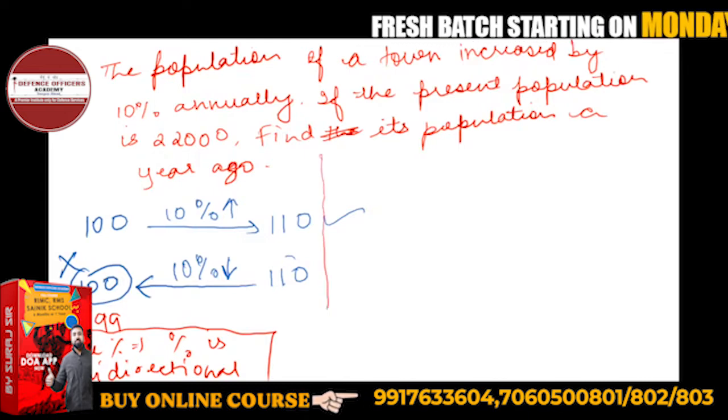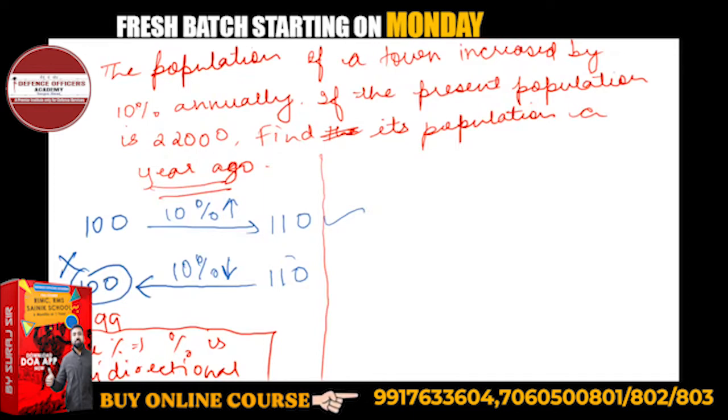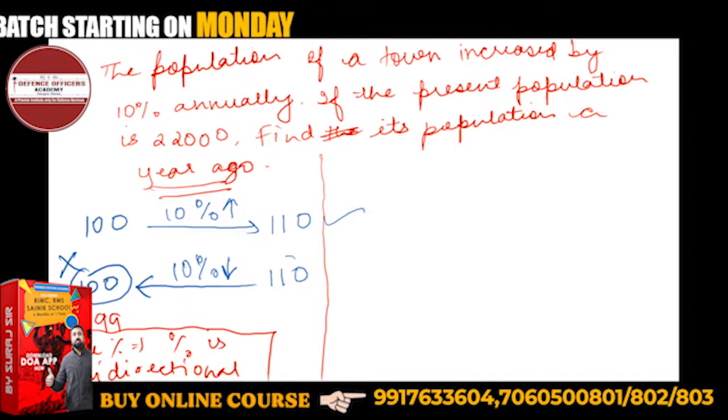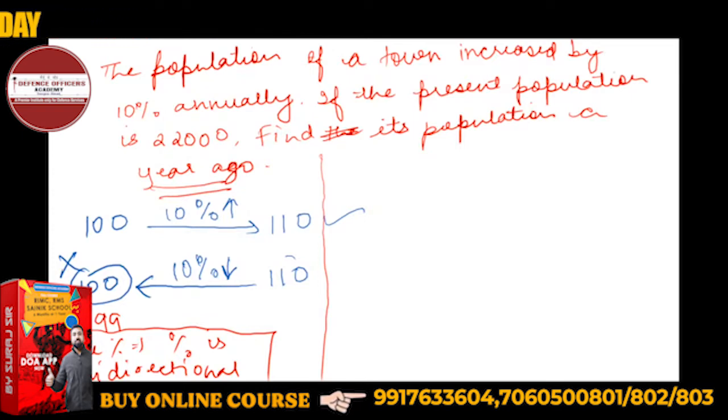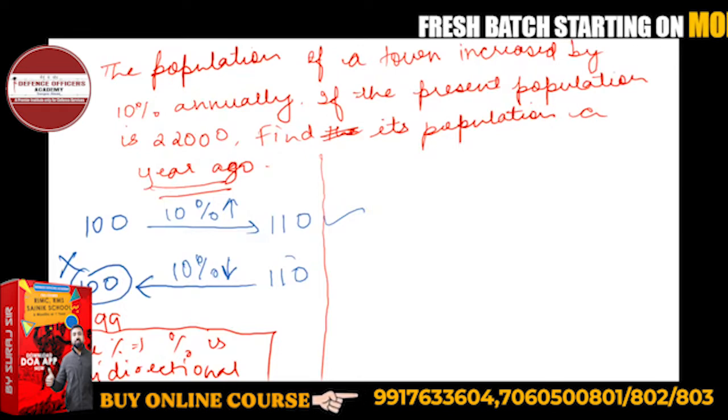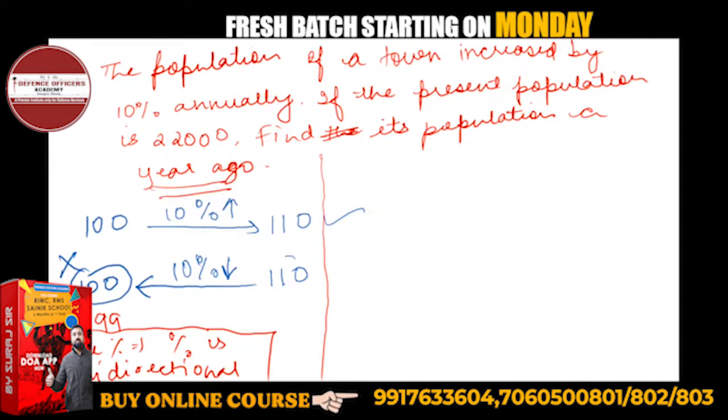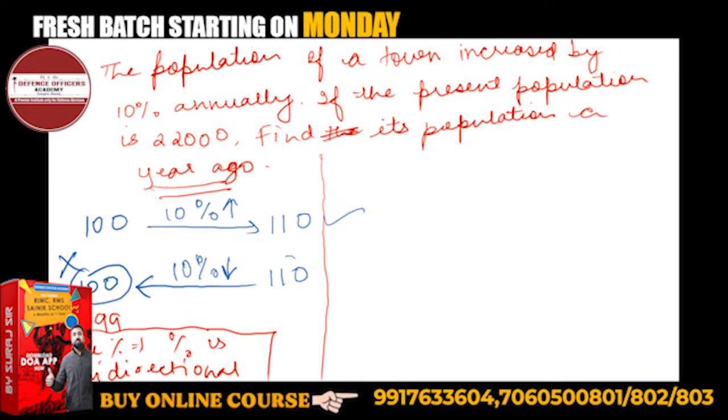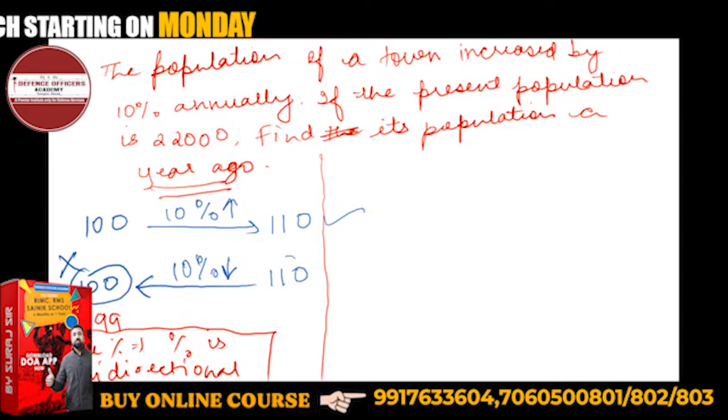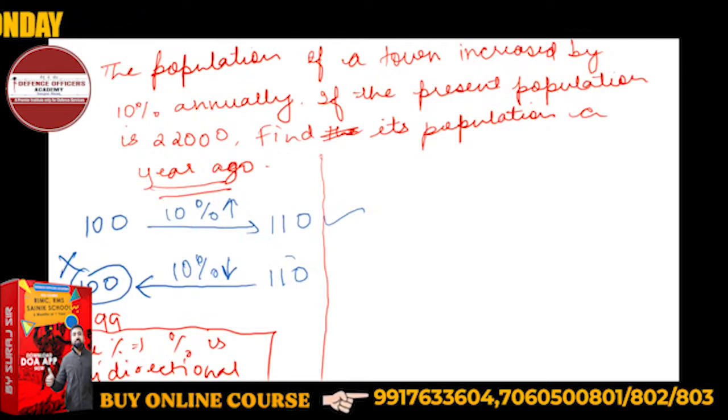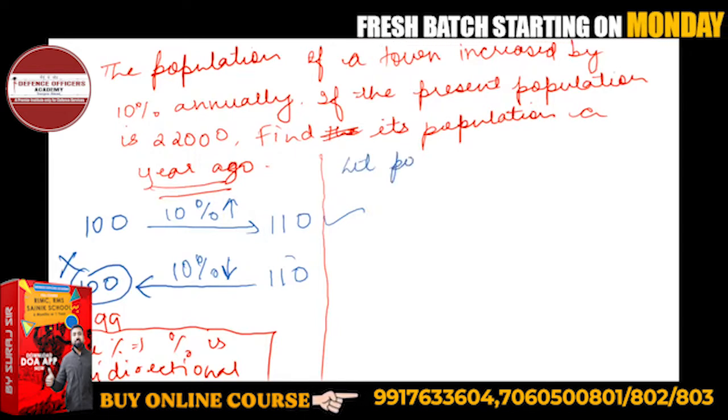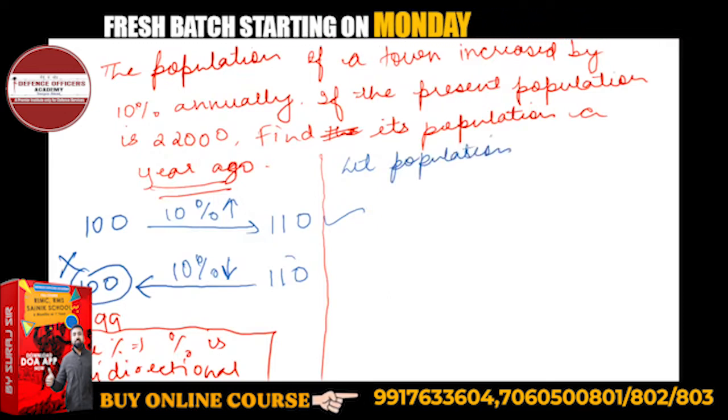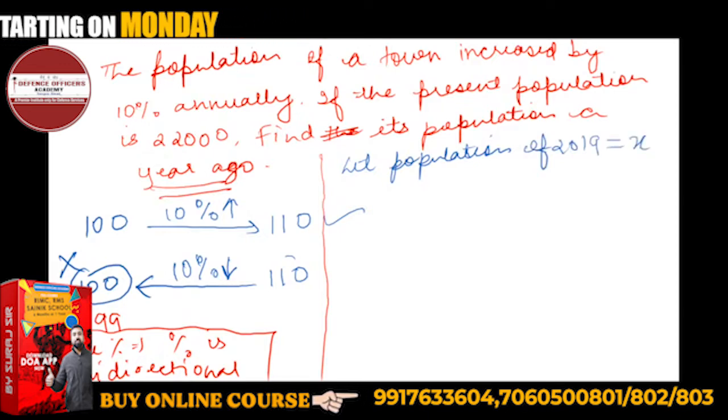Now let's see how easy to do this question. What is the population one year ago? Let population of 2019 be X. So this is the present, 2019, and you have to get 2020.